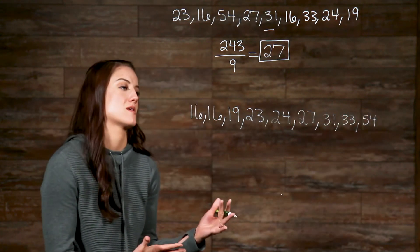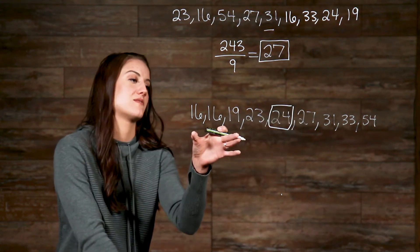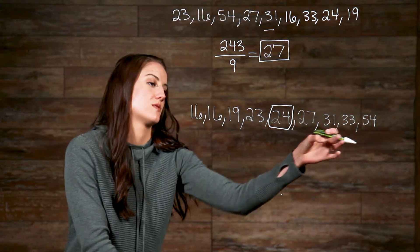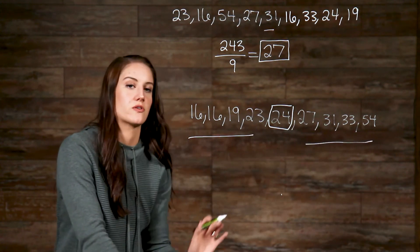...the number in the middle of a list of numbers. So, we can see that the number in the middle now is 24, and we know this because we have an equal amount of numbers on each side of 24. So, we have four numbers here and four numbers here, putting our 24 in the middle.